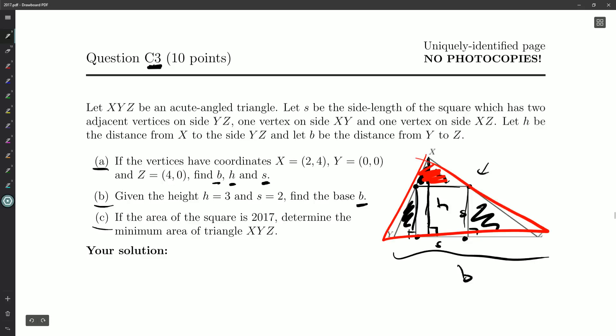And then c: If the area of the square is 2017, determine the minimum area of the triangle XYZ. Because just because you have a square, we know the square's side length will be root 2017, but you could have a very sharp triangle or you could have a very long triangle. So there's lots of different options. We want the minimum area.